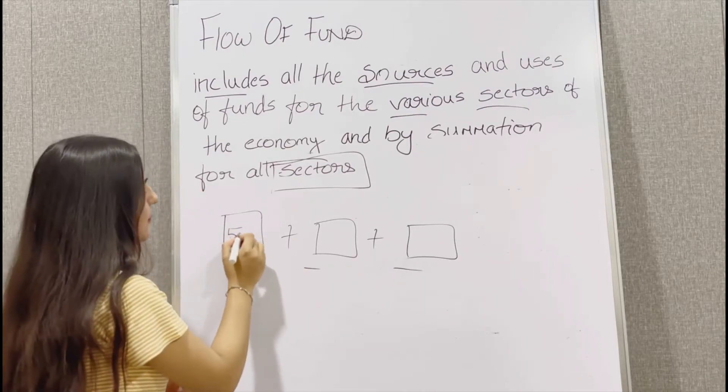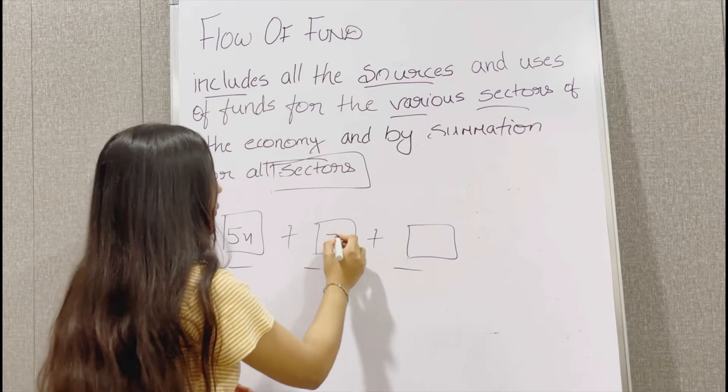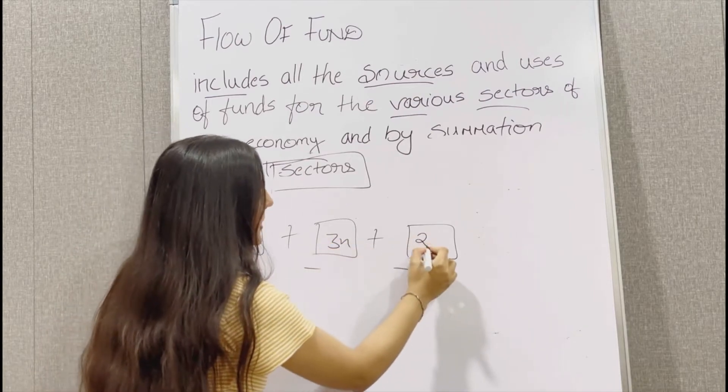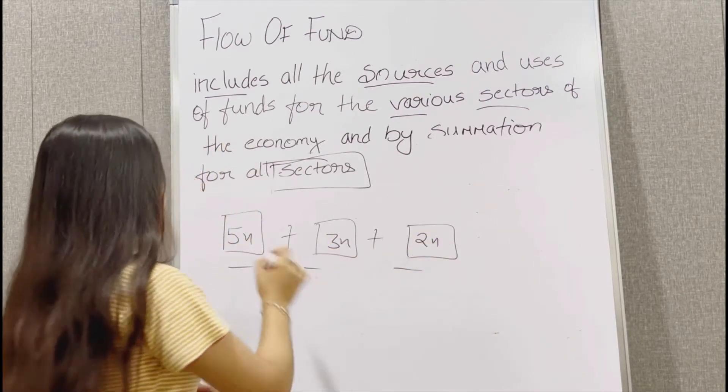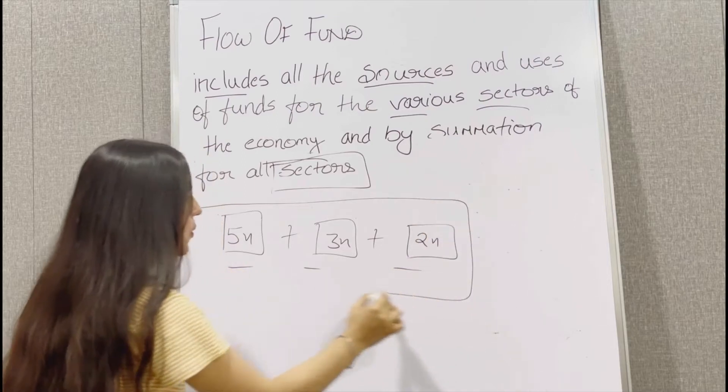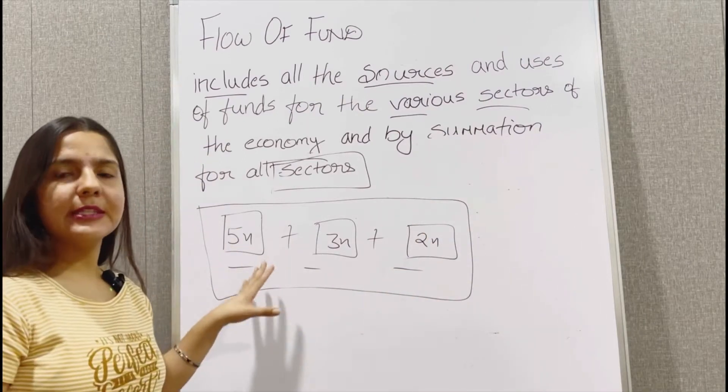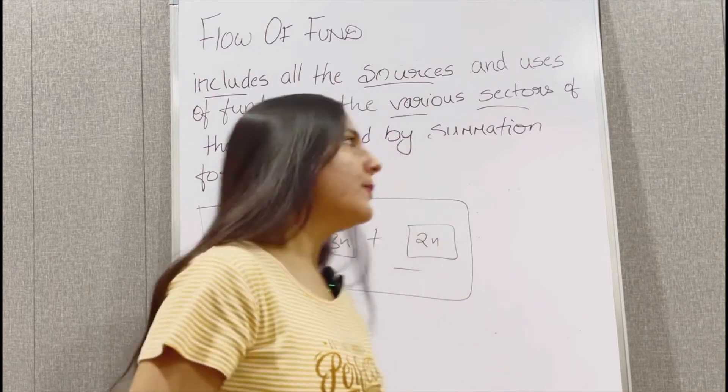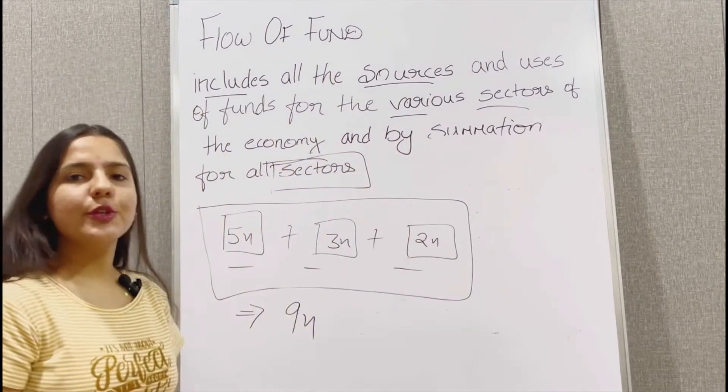Suppose 5x fund flows in first sector, 3x in second and 2x in the third sector. Now the flow of fund for this whole economy will be the summation of all these sectors. I hope flow of fund is clear to you.